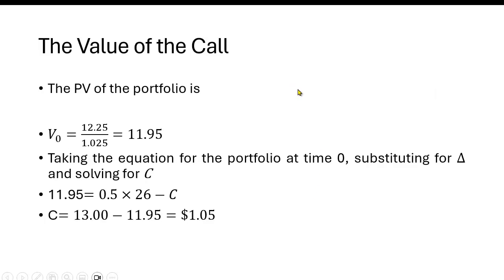So finally, we just want to find the price of the call. Well, what's the present value of that $12.25? That $12.25 is the value of the portfolio in both states of the world. We're going to take the present value of it. We said the interest rate was 5%. This is six months, so we used 2.5%. And you could do this with continuous time compounding. I'm just going to do it with discrete time discounting. It's $11.95. Taking the equation for the portfolio time period 0 and substituting for delta, we get the value of the portfolio. V0 equals delta times the price of the stock minus the value of the call. And if we solve for C,